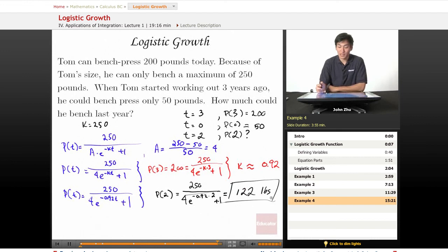So let's see if our answer makes sense. He's benching 200 today. He started with 50 three years ago, and last year he could only bench 122. So his growth model was somewhat fast. It started off exponential, and it was still at a very fast rate of growth near the end because it hopped up 80 pounds in one year.